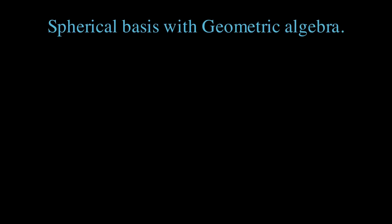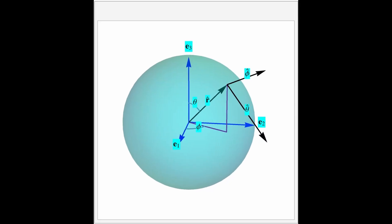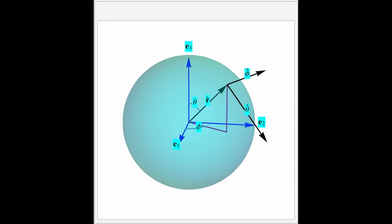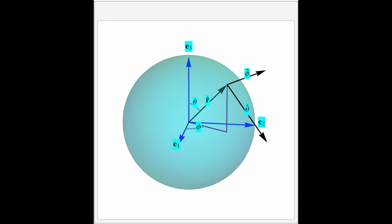In this video, I'll derive the geometric algebra form of the spherical basis vectors. Here's an illustration of the conventions that we'll use in this video. We'll put phi on the xy-plane and theta as the polar angle.